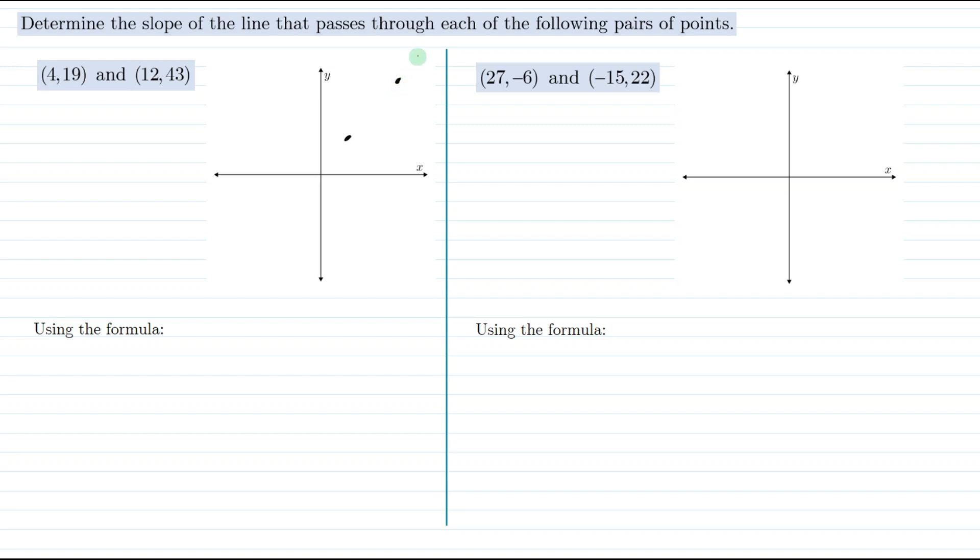So the line would look something like this. This point here is (4,19) and this point here is (12,43). So how do we find the slope of that line? Well we need to find the rise and the run. We need to figure out how much we went vertically and horizontally to get from one point to the next.